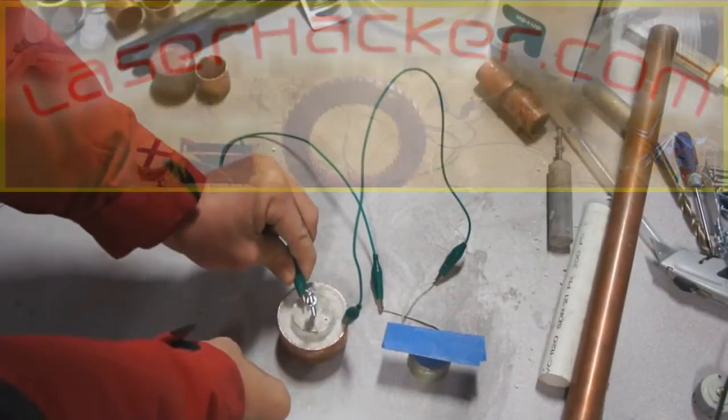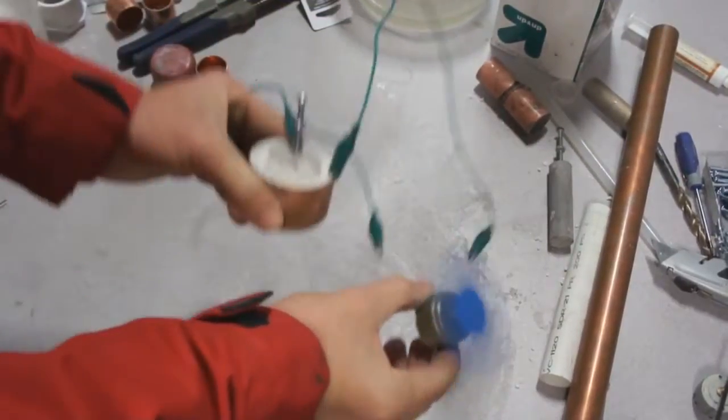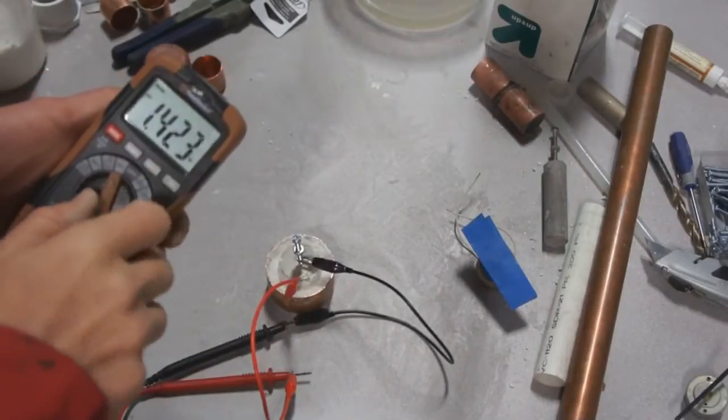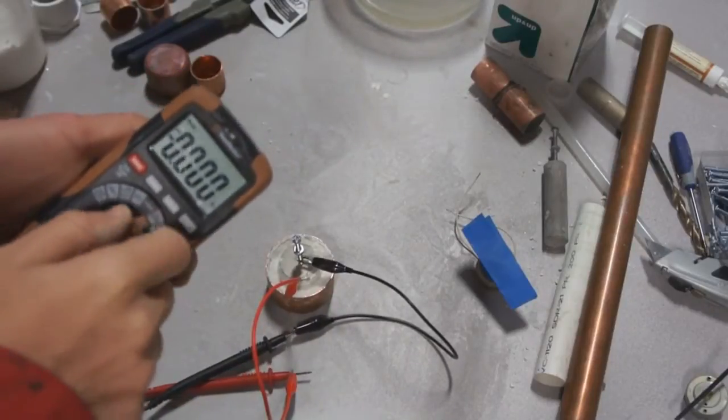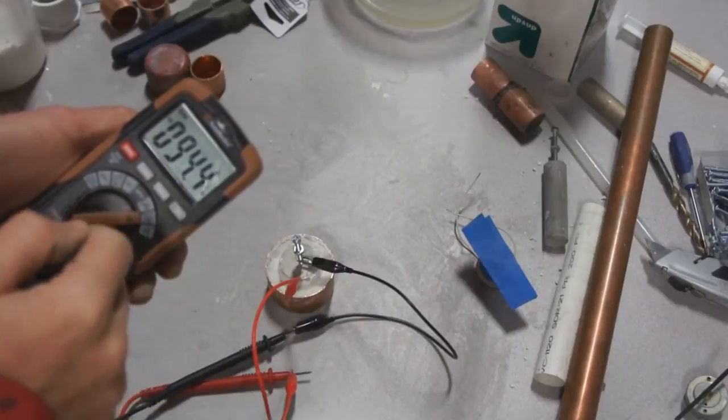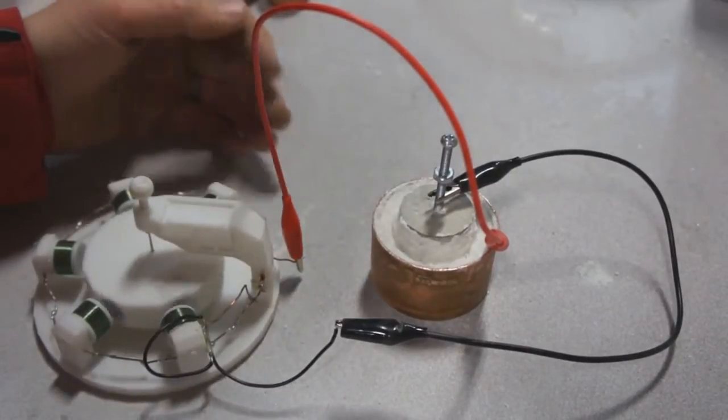Make sure we get some good contact there, and look at that, there it goes and it runs fast too. So 1.4 volts and it's putting out - I'll put this on the 10 milliamp setting - okay, it's greater than 10 milliamps, it's putting out 90 milliamps.